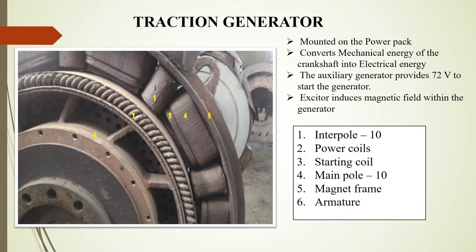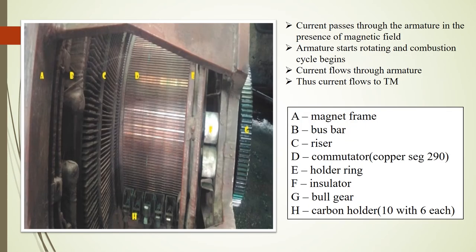Moving on to our next topic, the Traction Generator. For viewer convenience, all the parts of the Traction Generator are already available. A Traction Generator is mounted on the power pack and its major role is to convert mechanical energy of the crankshaft into electrical energy. When an engine starts, the auxiliary generator provides a voltage of 72 volts to start the generator. The exciter helps in inducing the magnetic field within the generator. When current passes through the armature in the presence of a magnetic field, the armature starts rotating, which leads to the crankshaft rotating and the combustion cycle occurring. Once combustion starts, current flows through the armature due to the force acting on it in the presence of the magnetic field, and this current is made to flow to a Traction Motor where mechanical energy is produced for movement of the locomotive.